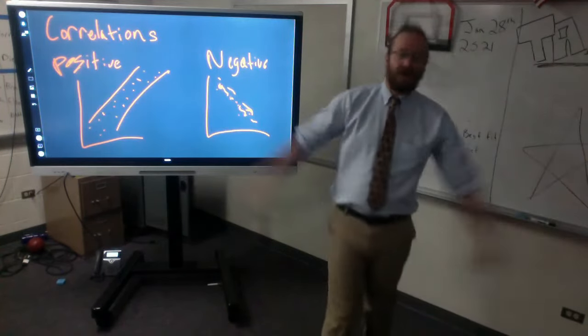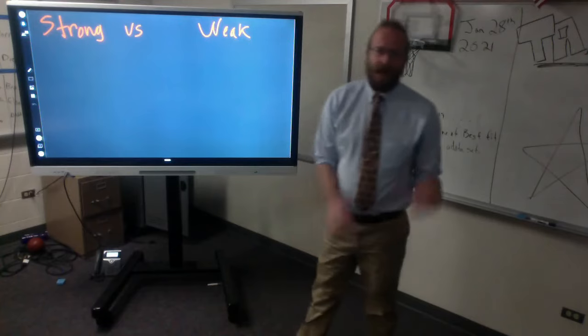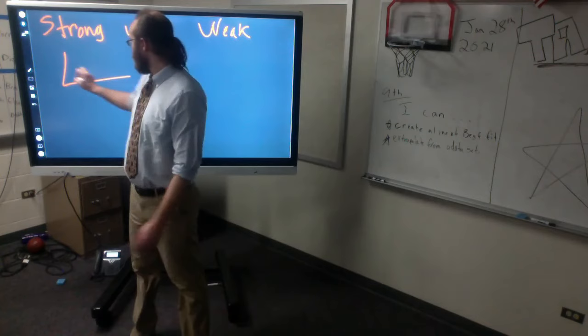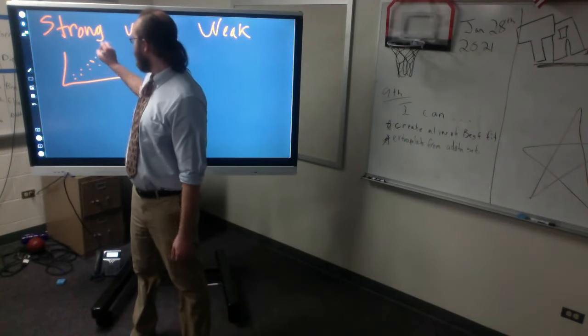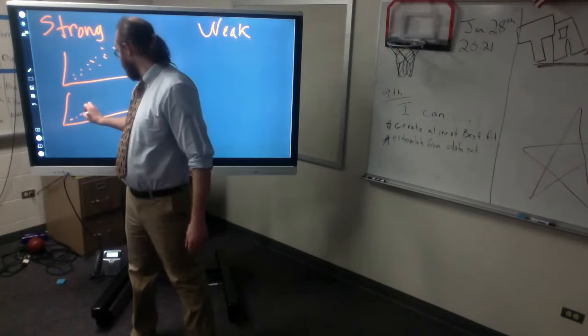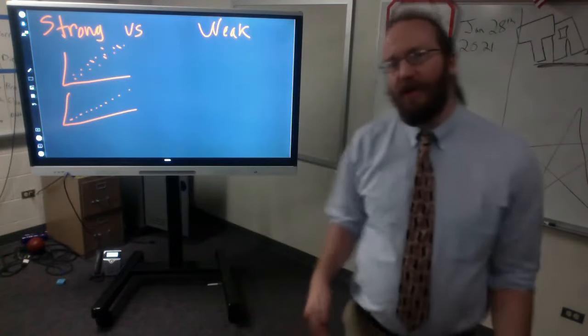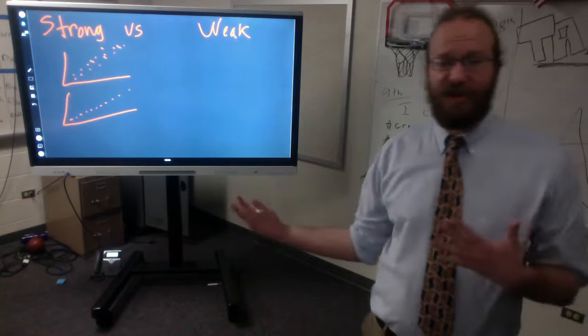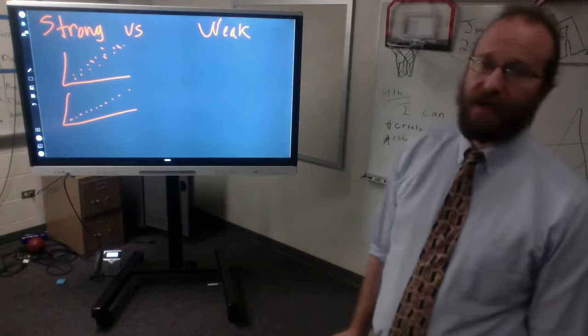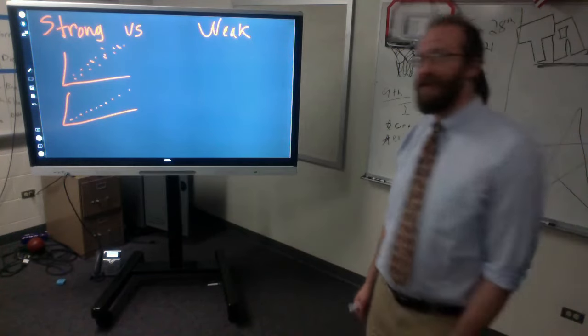No correlation would be the dots are all spread all over the place. Moving on. Next up, we have strong versus weak. A strong correlation can be really strong, where all the lines are very close. It can be perfect, which means they are exactly on a line. And the strong versus weak determines how far the majority of the points are away from the line. So the more spread out you are, the weaker your correlation is overall, whether it's positive, negative, or flat.